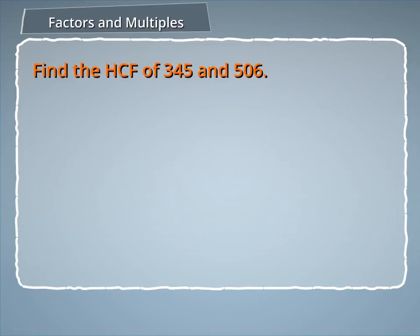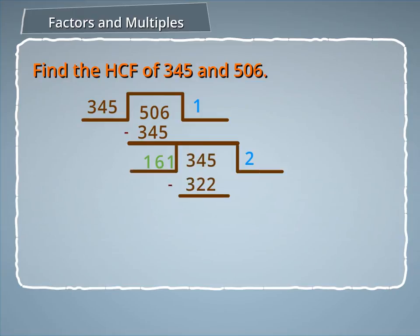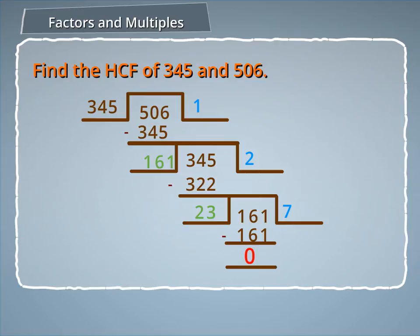Let us find the HCF of 345 and 506 using the Long Division Method. We divide the larger number by the smaller number: dividing 506 by 345 gives remainder 161. Then dividing 345 by 161 gives remainder 23. Finally, dividing 161 by 23 gives remainder 0. Hence, 23 is the HCF of 345 and 506.